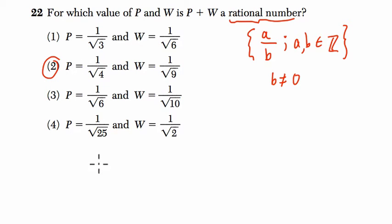And the answer is choice 2, because 1 over the square root of 4 equals 1 over 2, and 1 over the square root of 9 is 1 over 3.